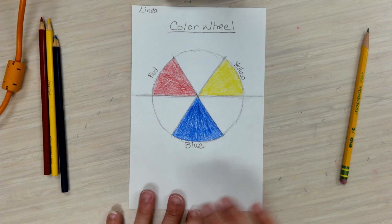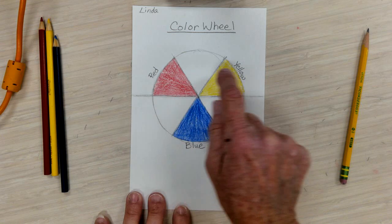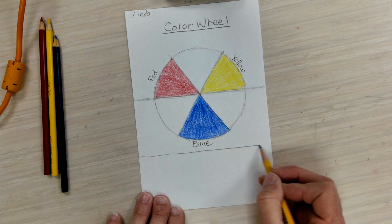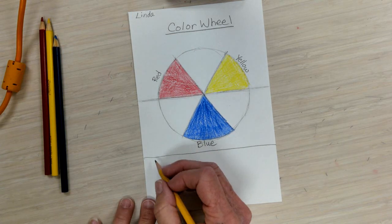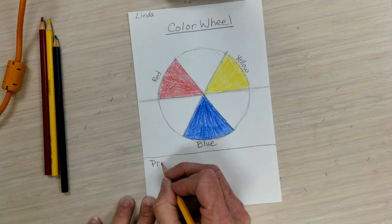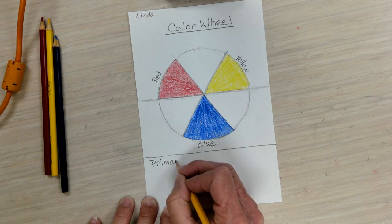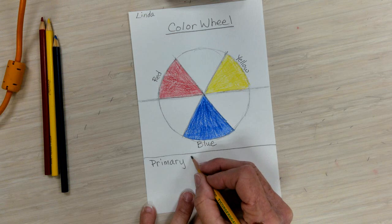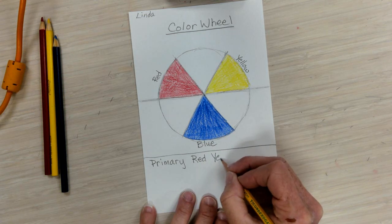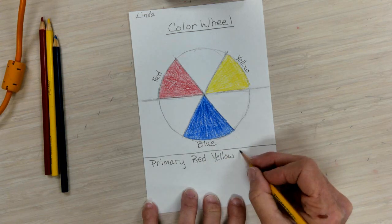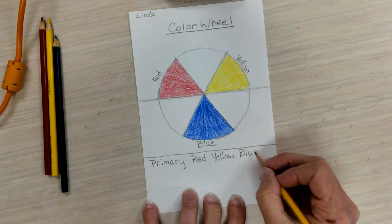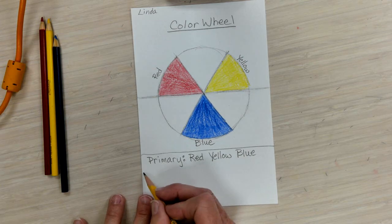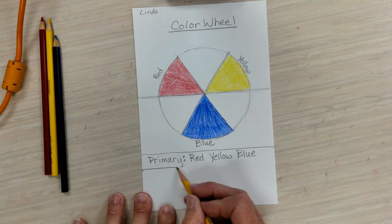So now we have our three primary colors. Red, yellow, and blue. And what I'm going to do is I'm just going to draw a line underneath here. And we're going to label P-R-I-M-A-R-Y. So, our primary colors, like I said, are red, yellow, and blue. And without these three colors, you would not have any other colors. So, then just draw a line underneath that to divide.